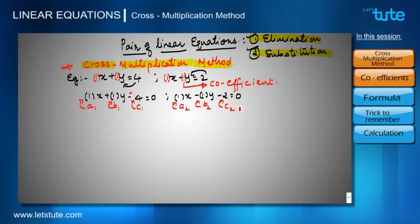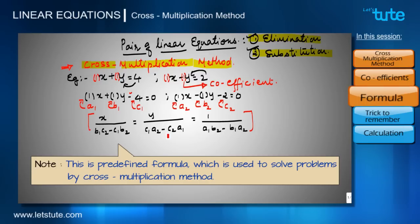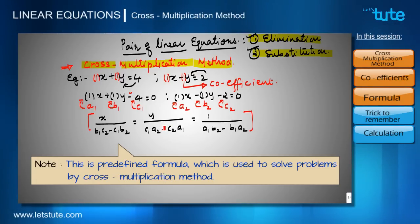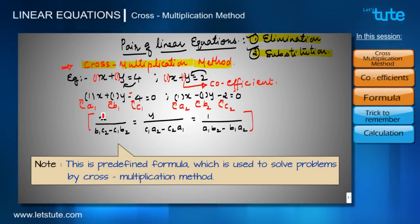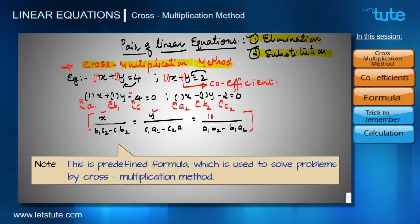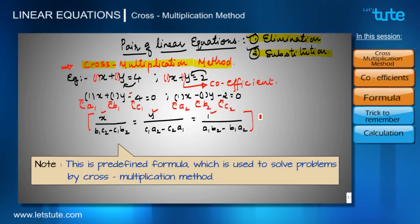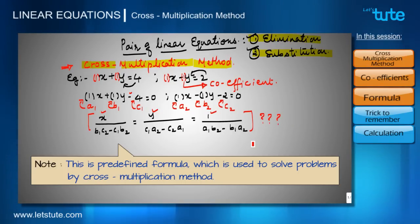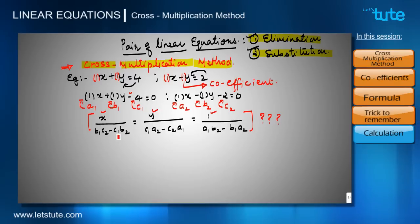We can get the values of x and y from these two equations by using the following formula. Let's understand how we got this formula. For three things we have three terms in the formula: for x we have this part, for y we have this part, and for the constant we have the third part. The question is how to remember such a big formula with so many terms. We have a simple trick to remember it — let's understand each part separately.